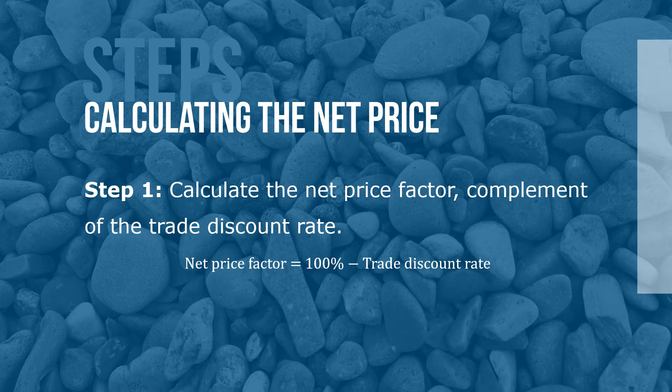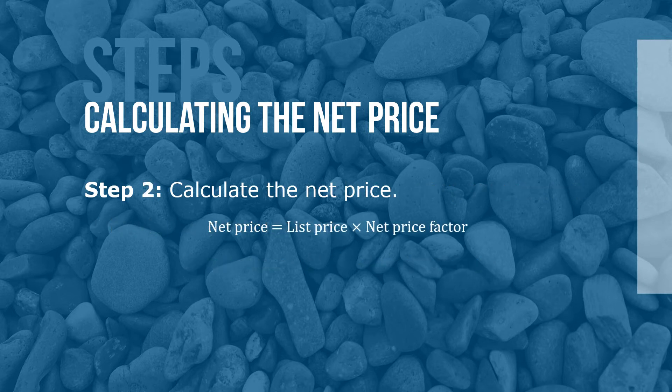Here are the steps for calculating the net price. Step 1: Calculate the net price factor, which is the complement of the trade discount rate. Net price factor equals 100% minus the trade discount rate. Step 2: Calculate the net price using the formula: net price equals list price times the net price factor.